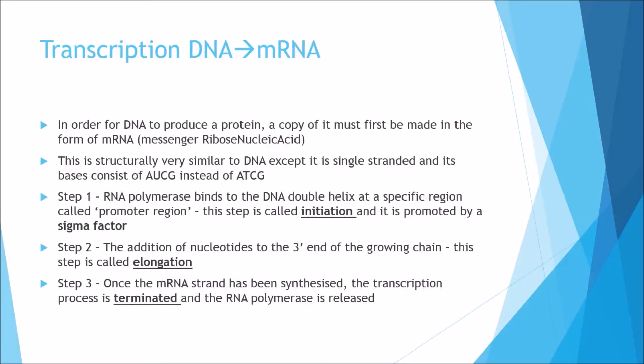The first step is transcription: DNA into mRNA. In order for DNA to produce a protein, a copy of it must first be made in the form of mRNA, which stands for messenger ribose nucleic acid. This is structurally very similar to DNA except it's single stranded, and its bases consist of A, U, C and G instead of DNA's equivalent of A, T, C and G.